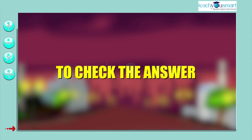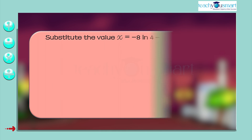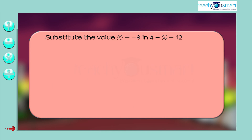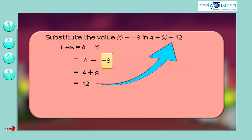To check the answer, substitute x = -8 in 4 - x = 12. LHS = 4 - (-8) = 4 + 8 = 12, which equals RHS.